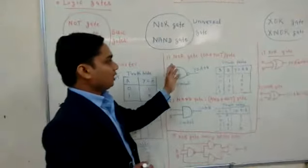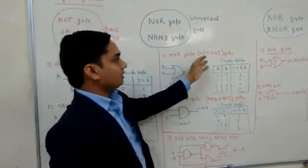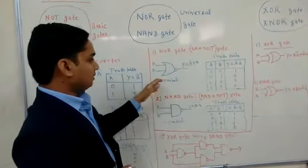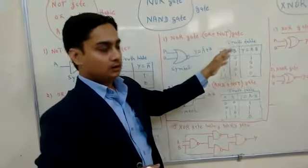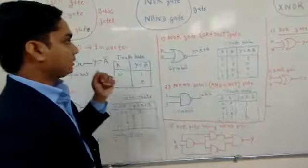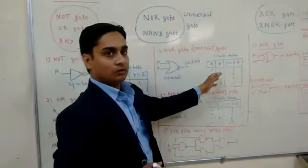These are both universal gates. The output of NOR gate is nothing but the combination of OR gate plus NOT gate. This is the symbol of NOR gate. Here, the output is A plus B bar. The output of NOR gate is just complement of OR gate. This is the truth table of NOR gate.